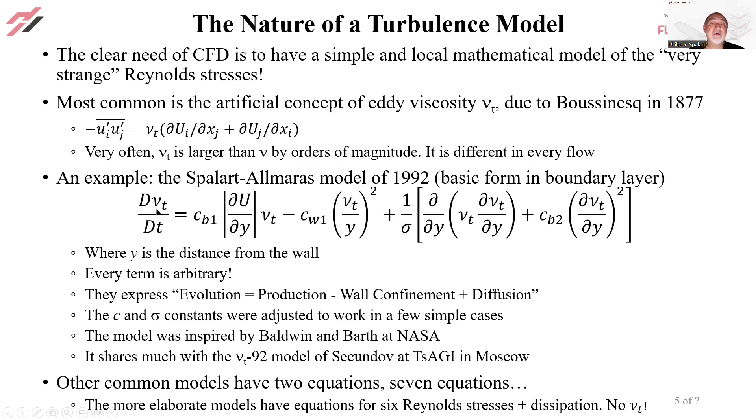To be impartial, I'll give you the simplest model that's in common use, the Spalart-Allmaras model of 1992. I'm just showing you the basic form in the boundary layer and away from the wall. I created an equation that gives you the evolution of νt and has terms of three natures. y is the distance from the wall, U is the velocity of the mean flow.